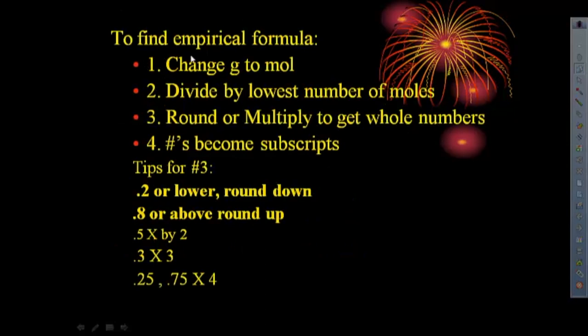To find the empirical formula, you have to follow these steps. First you change your grams to moles, then you're going to divide by the lowest number of moles, then you will round or multiply that to get whole numbers. And these numbers will become the subscripts for the element you're solving for. Now, on number three, this little multiply tip, you might need to come back here sometime during the video or in the future if you get confused.